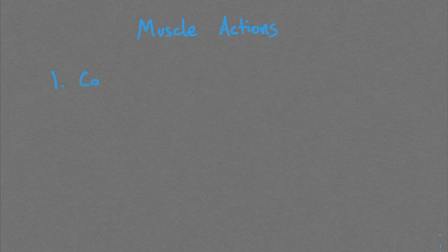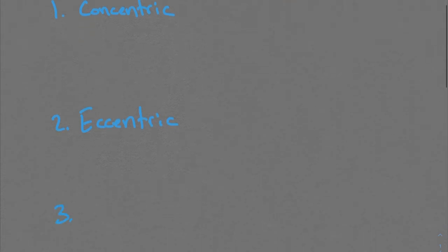So let's dive in a little deeper and take a look at each one. We're talking about muscle actions today, specifically the three types. The first one we'll talk about is concentric, then eccentric, and finally isometric. Recall that the different types of muscle actions have to do with whether the muscle is shortening under tension, lengthening under tension, or holding tension without any movement.